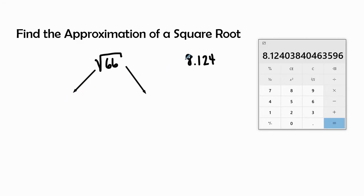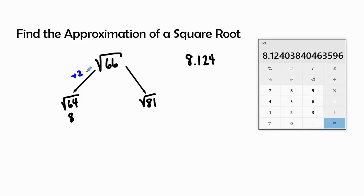Because it's 8, we're going to have radical 64, which simplifies to 8, and then radical 81. Now I'm going to ask myself: what is the distance — how many numbers between radical 66 and radical 64? That's going to be positive 2. And then what is the distance between radical 64 and radical 81? That's going to be 15. If I took 81 and subtracted 15 from it, I would get 66.